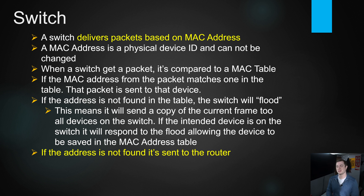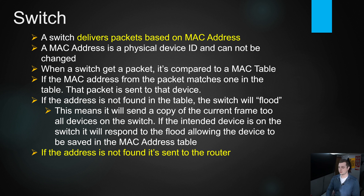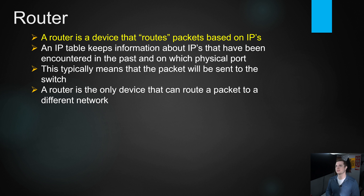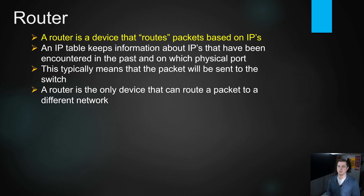If a packet isn't in the switch's table and no response comes back from any device, it gets sent to the router. The router uses IP addressing to route that packet. It works similarly to the switch but uses IPs — it takes the IP, compares it to the routing table, and sends the packet out the interface that matches that IP.